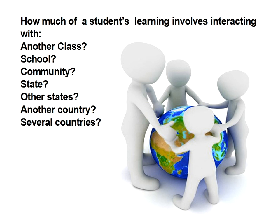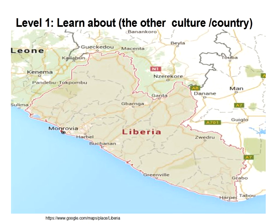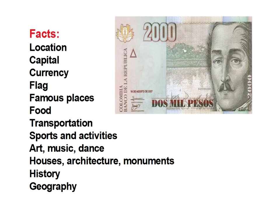I'd like to start with the very first level: learning about the other country or culture. What usually happens is that we teach the facts about the country — where it's located, its capital, what type of money they use, what the flag looks like, famous places, what are some typical foods, transportation, sports activities, art, music, dance. As you can see from this list, they're pretty factual information.